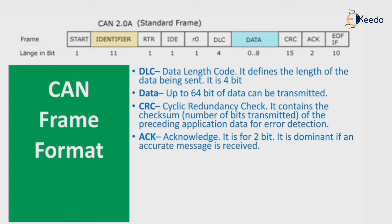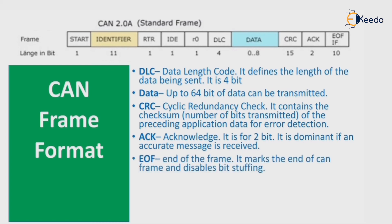ACK — Acknowledge — is 2 bits and is dominant if an accurate message is received. EOF — End of Frame — marks the end of the CAN frame and disables bit stuffing.